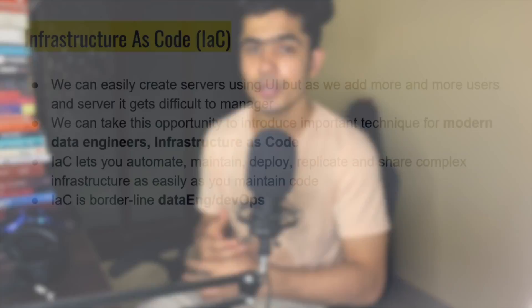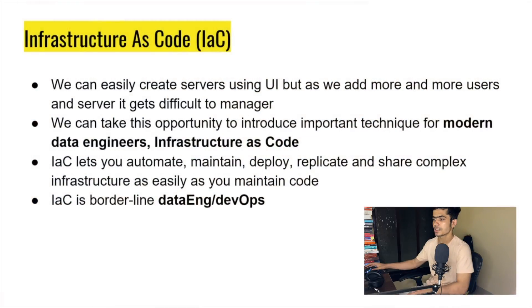So we have different ways to interact with AWS, and this is basically called Infrastructure as Code. This is a little bit into DevOps, but remember as a data engineer you might be working on the deployment side too because you need to deploy the entire data architecture. We're going to understand that in this video.